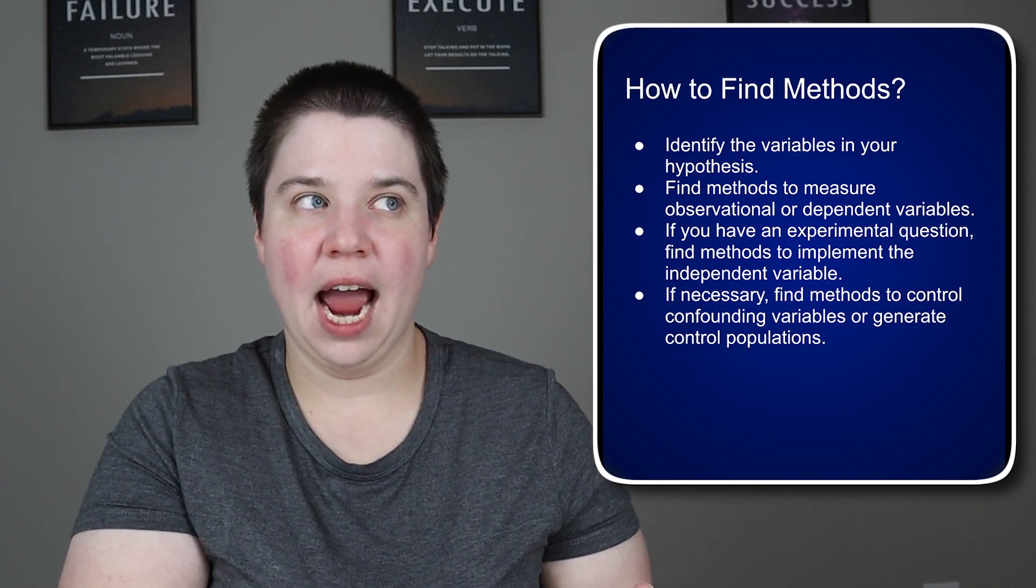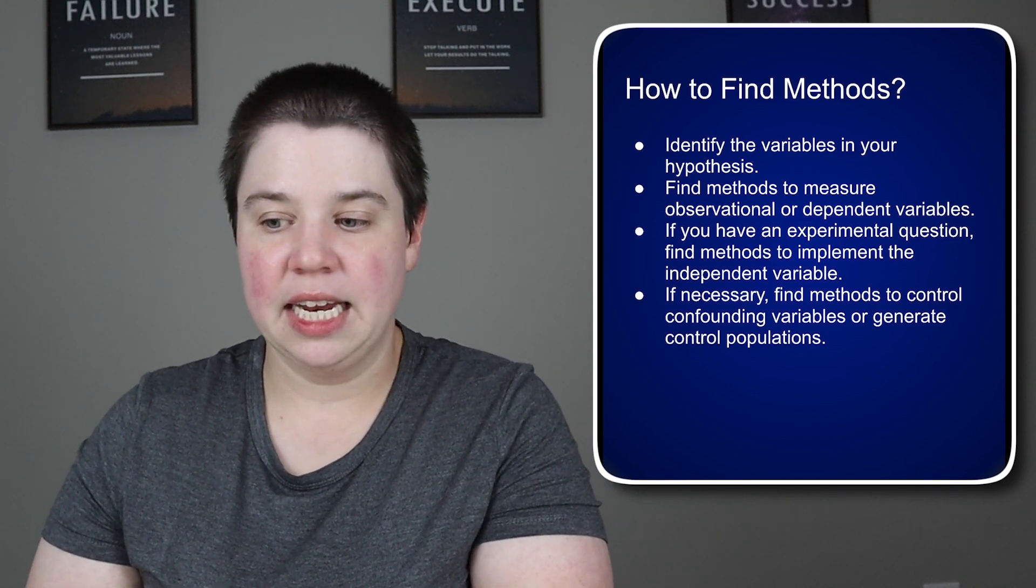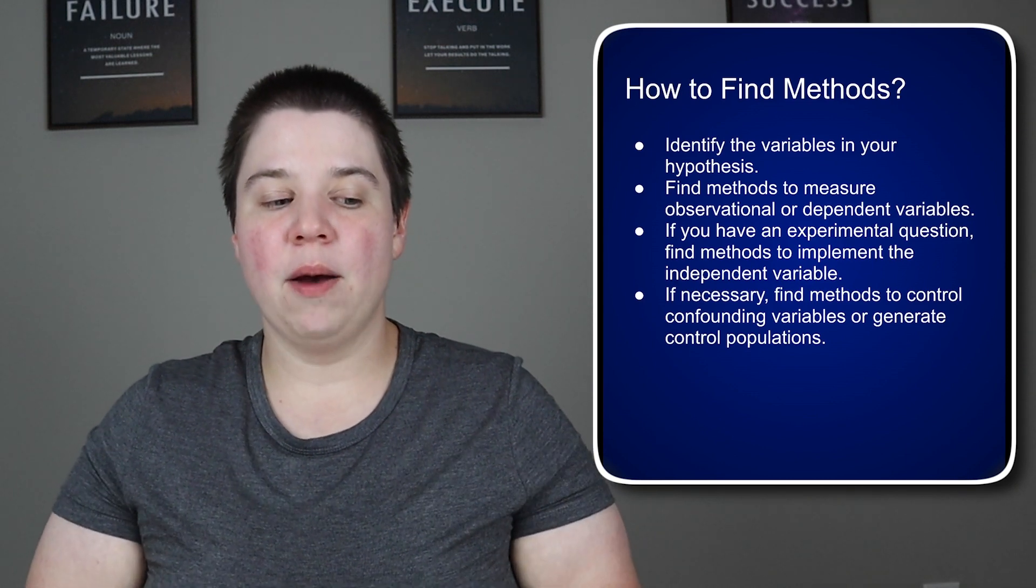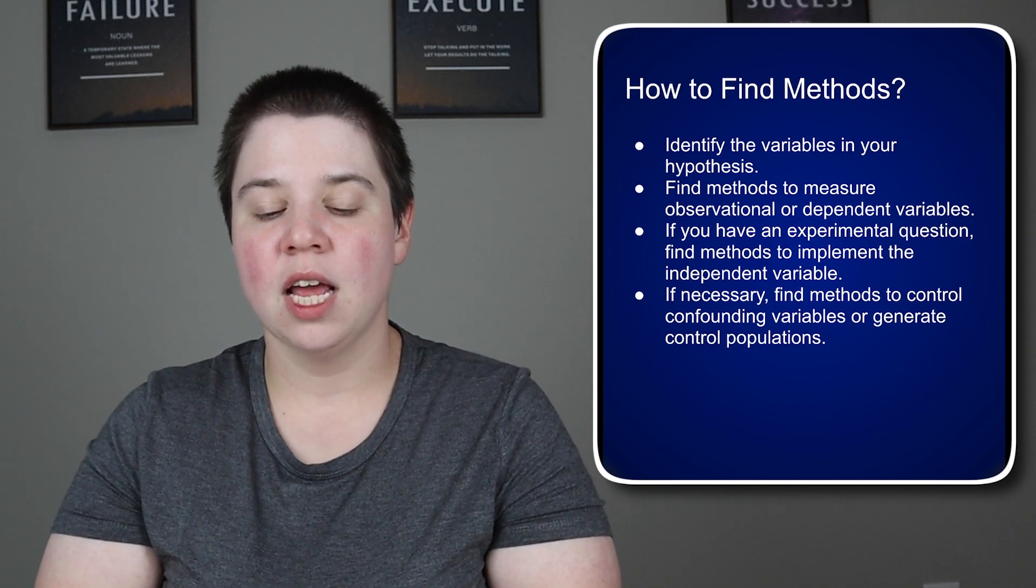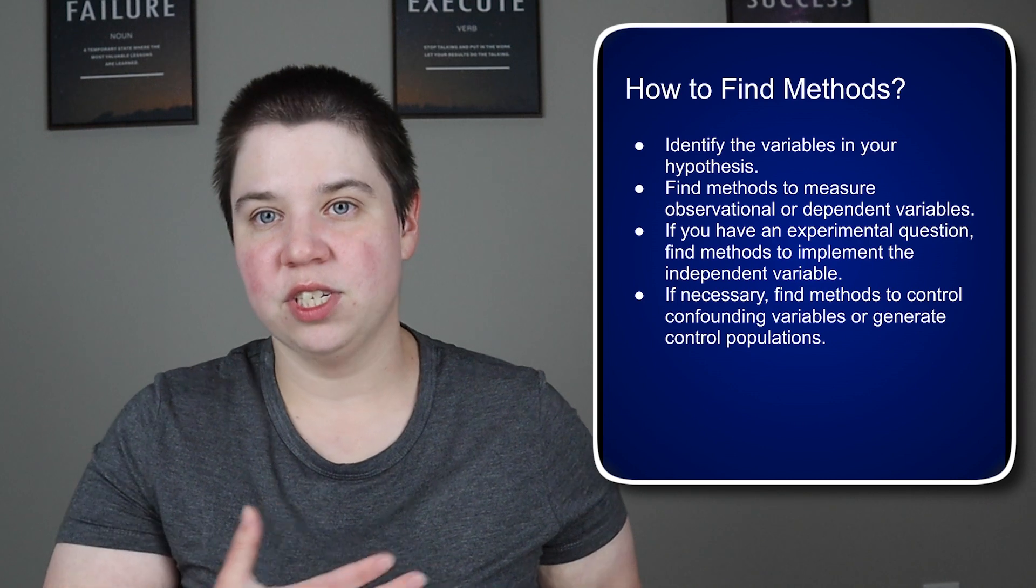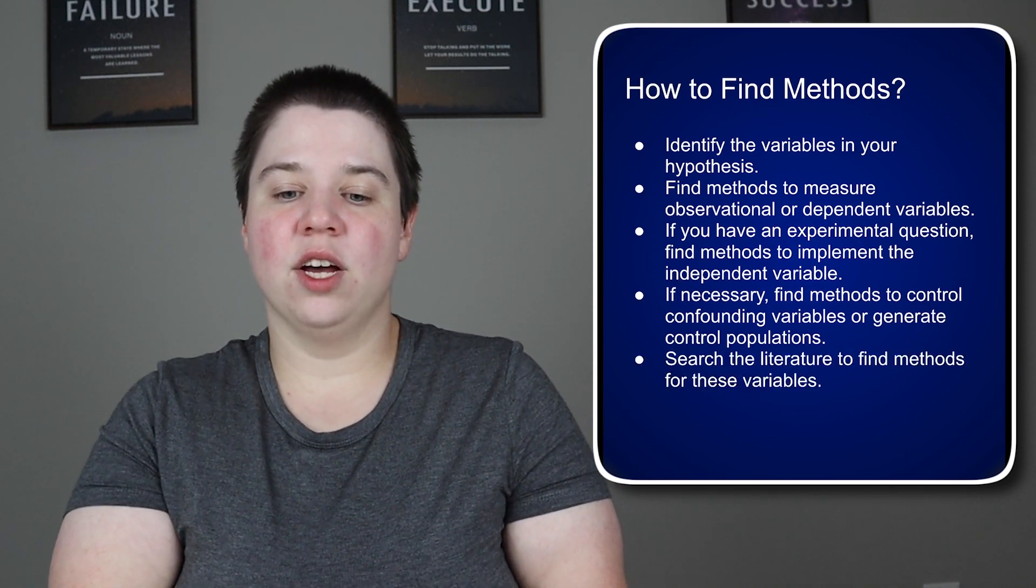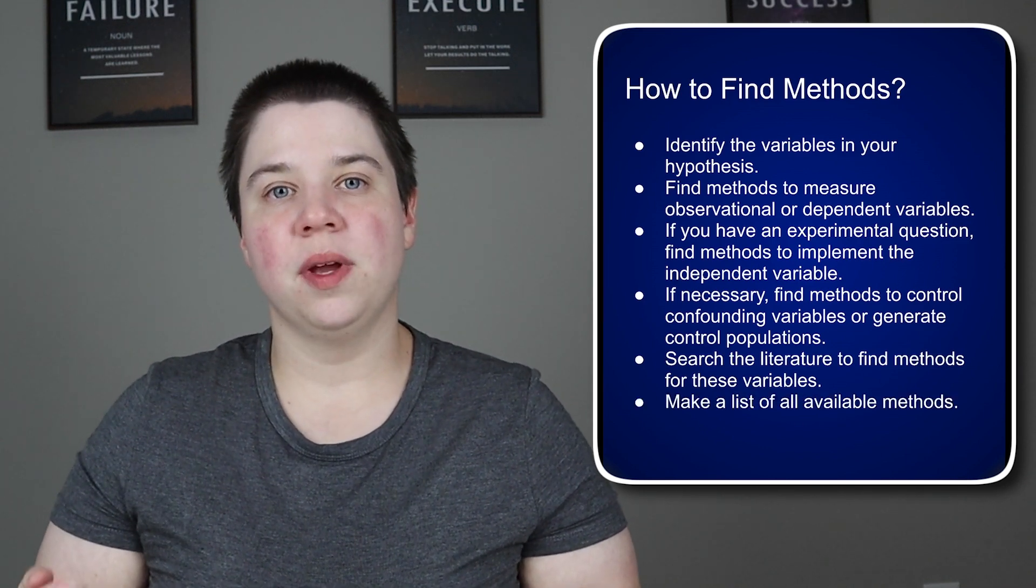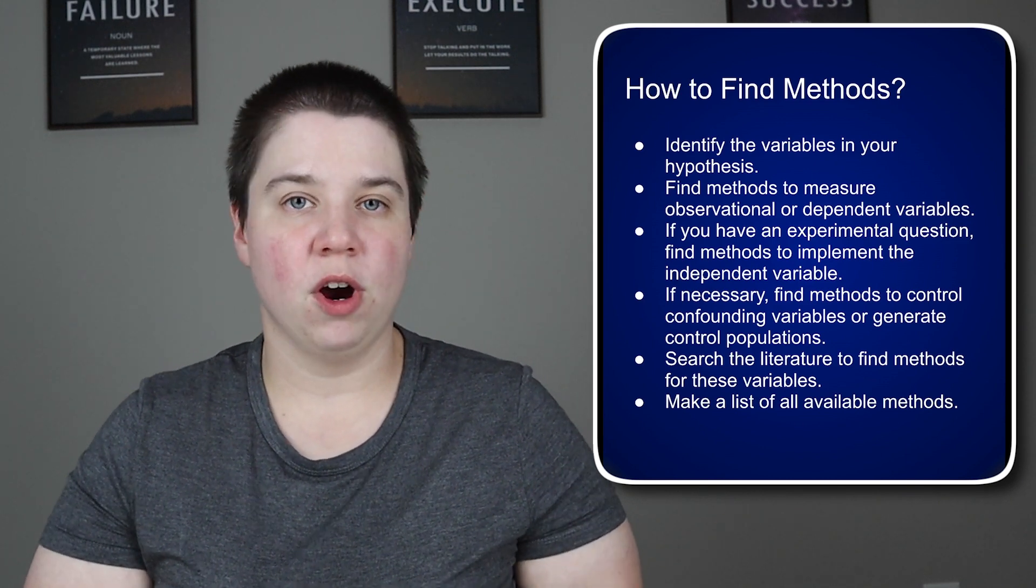And so I looked into the literature for how did studies of this nature create control populations. And one of the ways they did it was through getting tissue samples from brush reduction surgeries. And so that was a way I could use the literature to find a control group or to control confounding variables within my study. And so generally, you can find something in the literature that's done something close enough to your study to be able to help you figure out how to find a control group for that. Then we go ahead and search the literature to find methods for these variables. Once we've searched the literature, we can make a list of all the available methods. And then we can look at them to see which is the most appropriate for our research question.